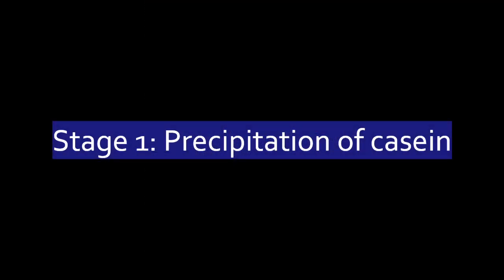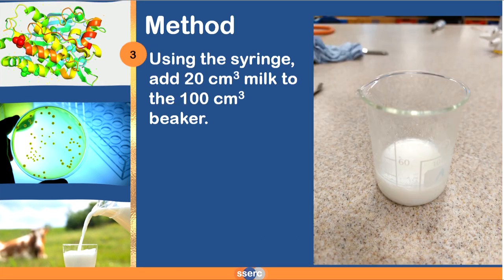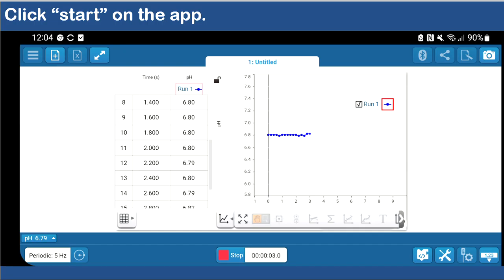To precipitate the casein we're going to start with 20 cubic centimeters of milk in a beaker. To that we are going to add a magnetic flea and we're going to allow continuous stirring on a magnetic stirrer. The milk should be at around 40 degrees Celsius when we're doing this.